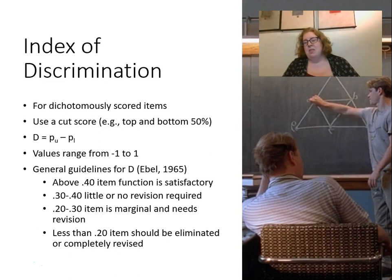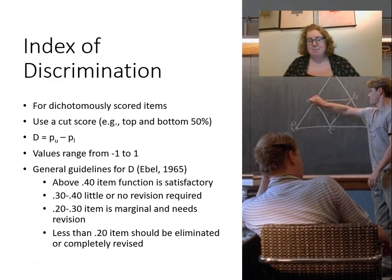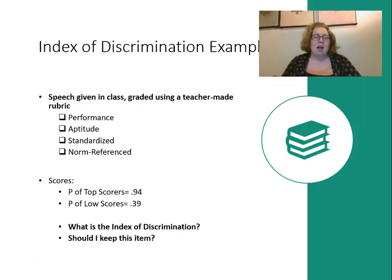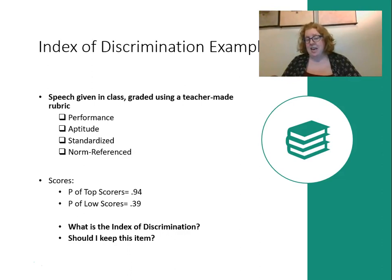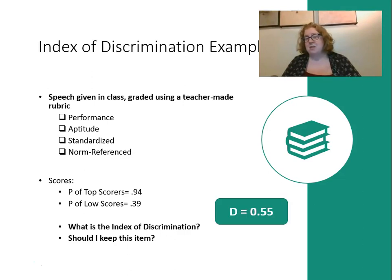Here's a calculation example: for a multiple-choice question, the proportion correct in the top half was 0.94 and in the bottom half was 0.39. The index of discrimination is 0.94 minus 0.39, which equals 0.55. According to the guidelines, should I keep this item? Yes — based on these data I should keep it.